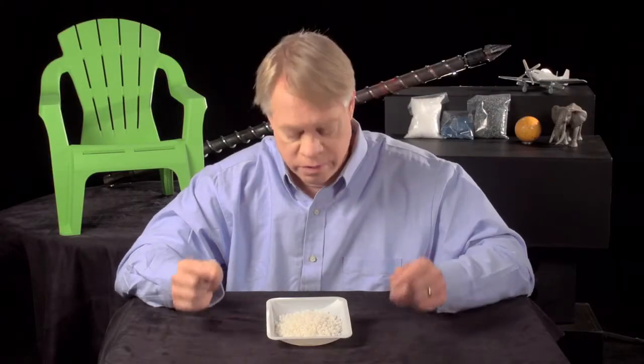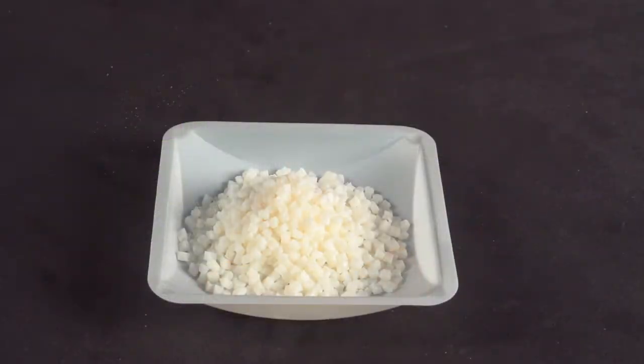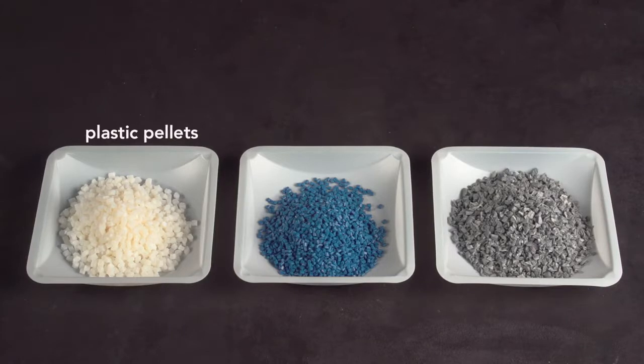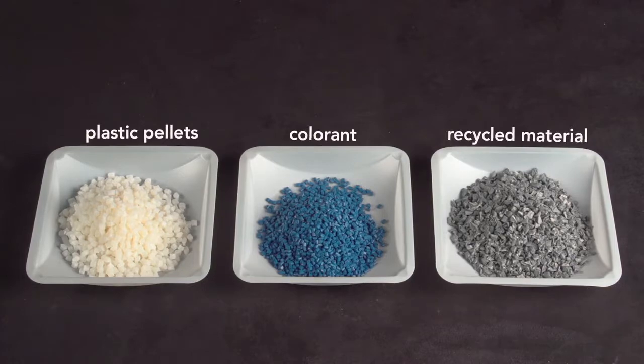All injection molded objects start with these plastic pellets, which are a few millimeters in diameter. They can be mixed with small amounts of pigment, called colorant, or with up to 15% recycled material then fed into the injection molding machine.